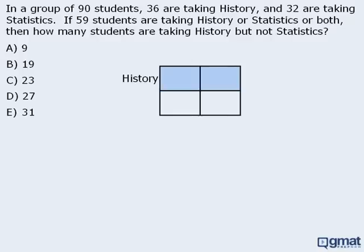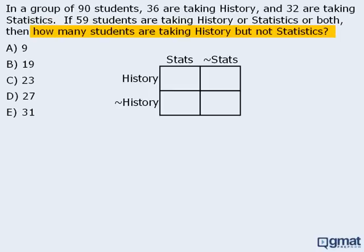Let's reserve the top row for students who are taking history, and the bottom row for students who are not taking history. Next, we'll reserve the left-hand column for students who are taking statistics, and the right-hand column for students who are not taking statistics. Our goal is to find the number of students who are taking history but not statistics, so we'll place a star in that box.